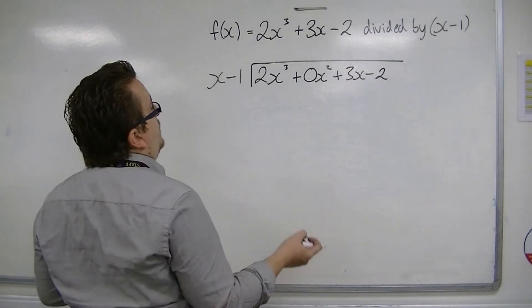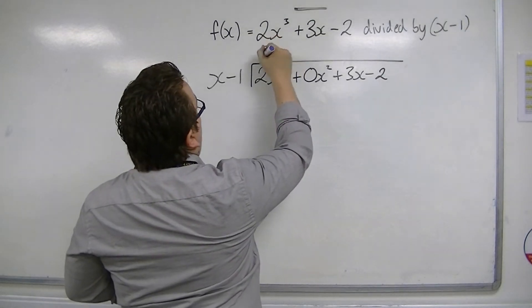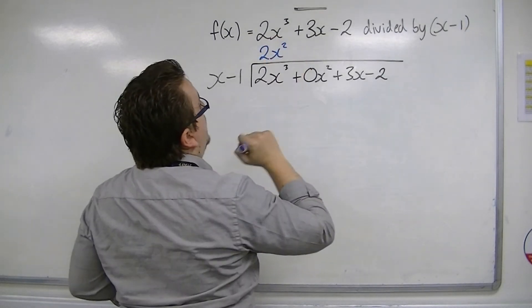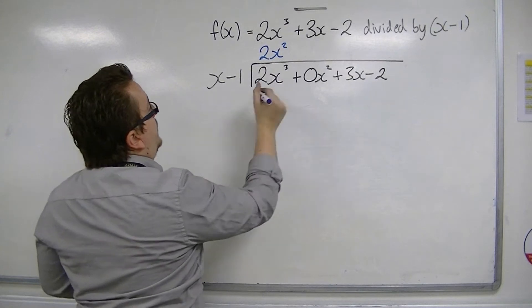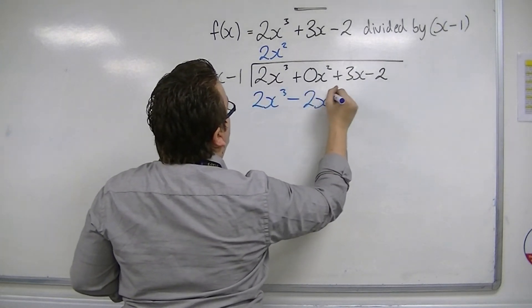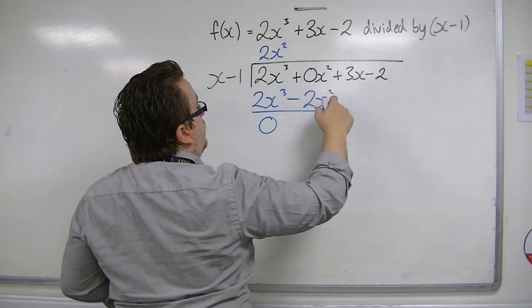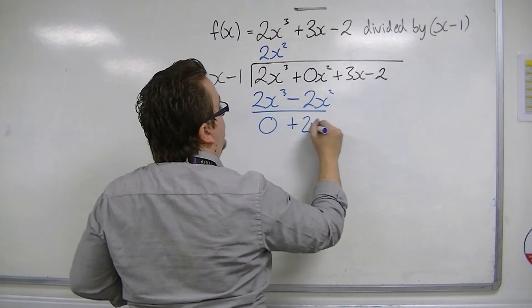Fill in any gaps with 0 times the power of x that you need, and then you can perform the division as usual. x is into 2x cubed, go 2x squared. 2x squared times these two terms: 2x cubed, take away 2x squared. Draw a line, perform a subtraction. 0x squared take away 2x squared is plus 2x squared.